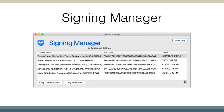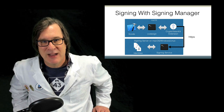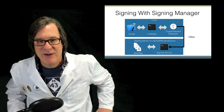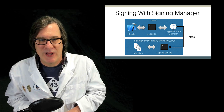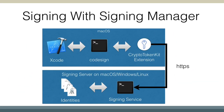That's the problem that Signing Manager solves. Signing Manager allows you to select certificates and continue to use the native tools locally, but the actual credentials are stored on a remote machine. Xcode still uses the CodeSign command to sign your applications, but instead of talking to the local keychain, it sends a hash of the application over HTTPS secured by SSL, along with an API key, to a signing service that runs on macOS, Windows, or Linux on a server at your location. The data is signed with the private key on that remote server, and the signature is passed back and incorporated into the application.